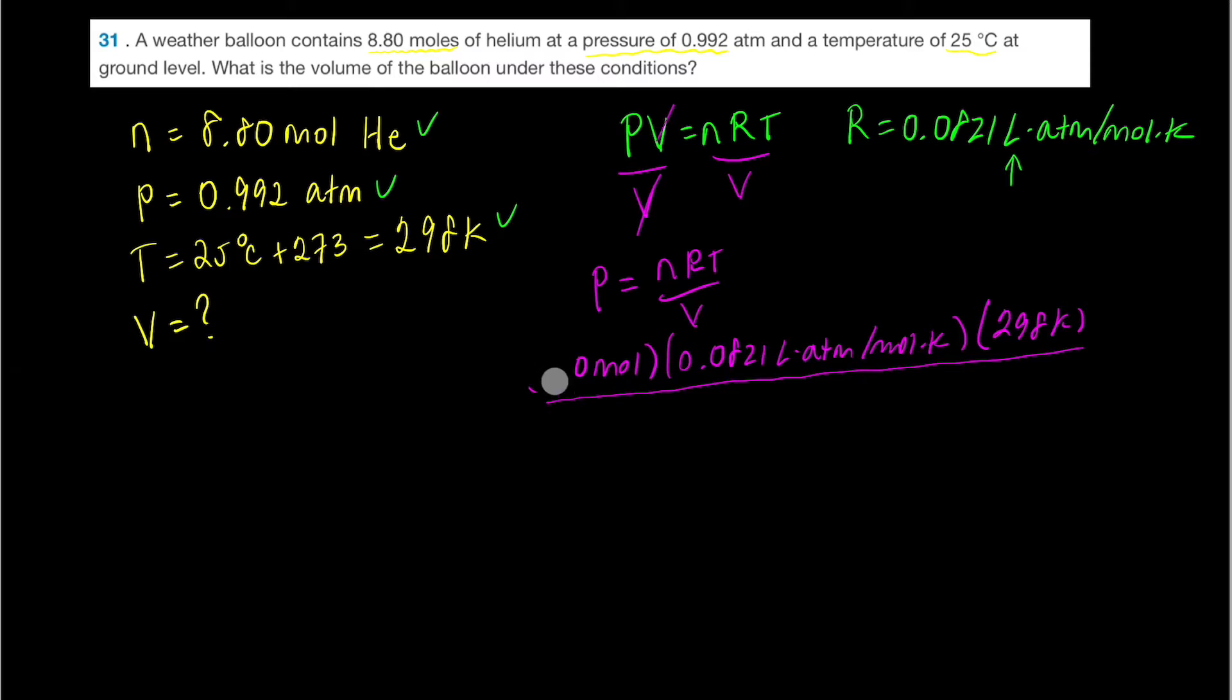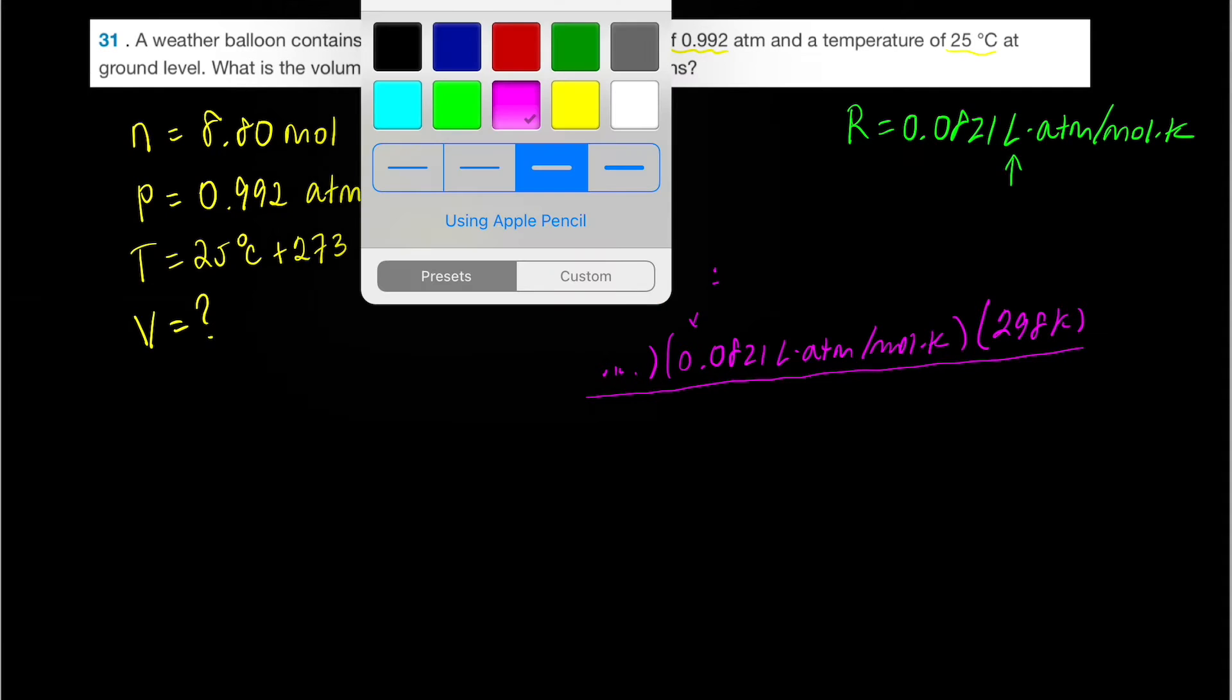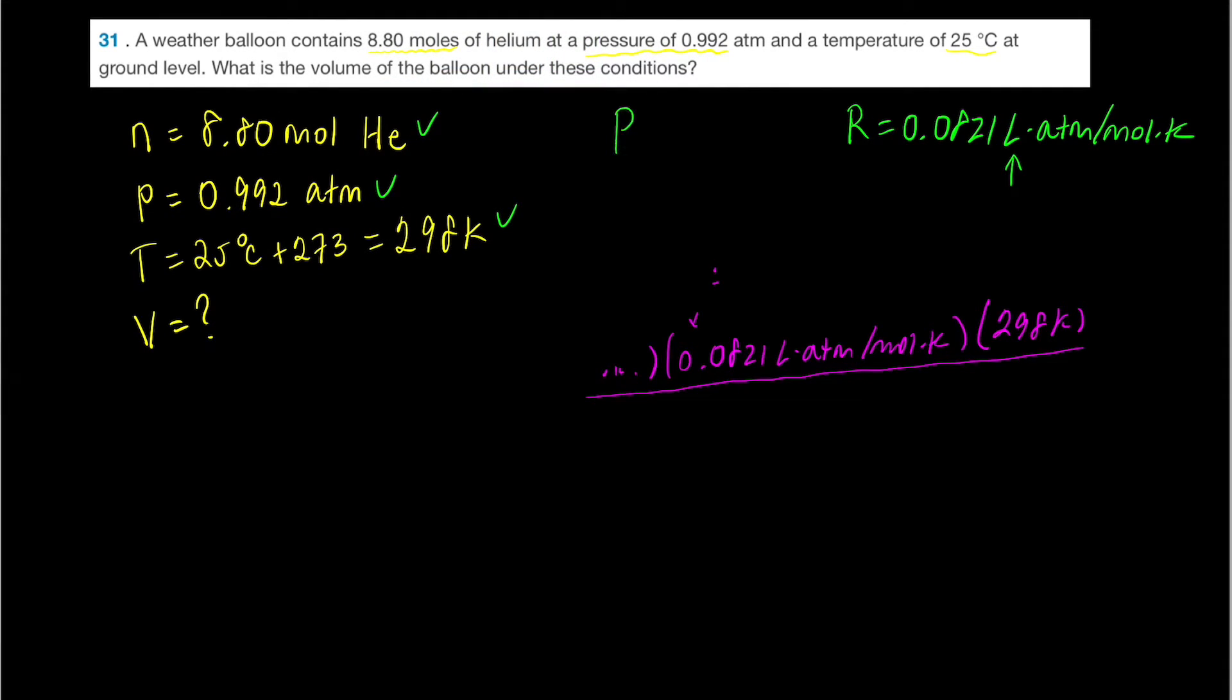So we need to do the algebra correctly. We need to divide both sides by the pressure. So PV equals nRT. We need to divide both sides by the pressure, and that's going to give us a new formula with volume. So that's nRT over P.